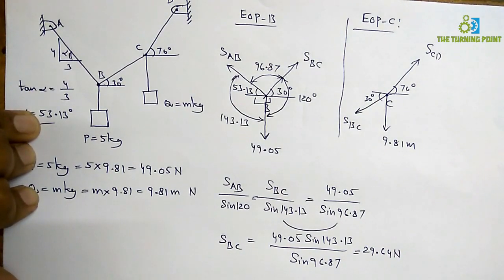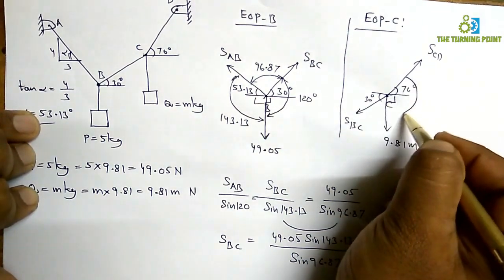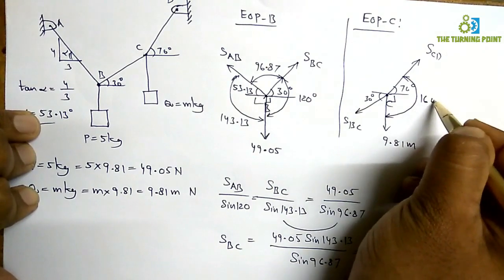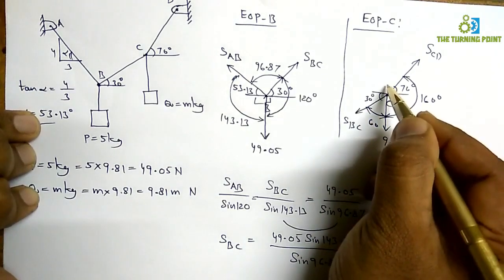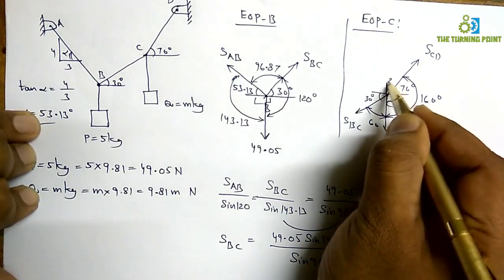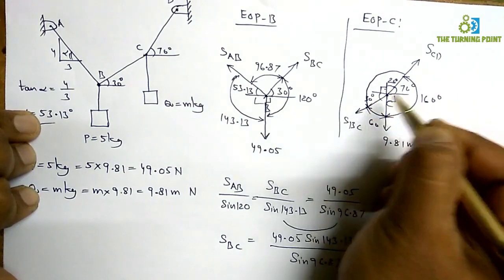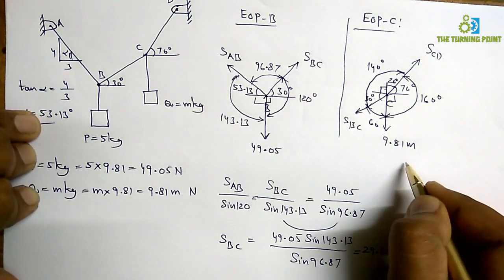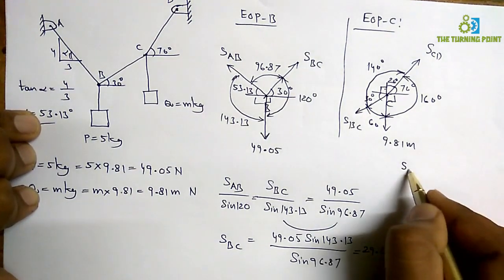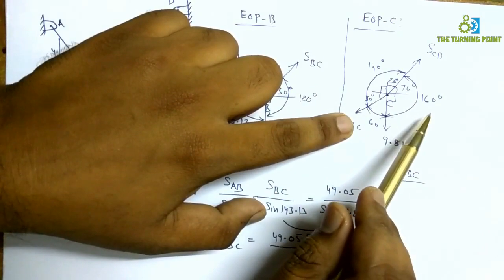There are three forces at C, so I can apply Lami's theorem. Calculating the angles: 70 + 90 = 160 degrees; the adjacent angle is 60 degrees; 20 + 90 + 30 = 140 degrees. Applying Lami's theorem: TBC/sin(160) = TCD/sin(60) = 9.81m/sin(140). Since block Q is connected to BC, the angle between TCD and 9.81m is 160 degrees.